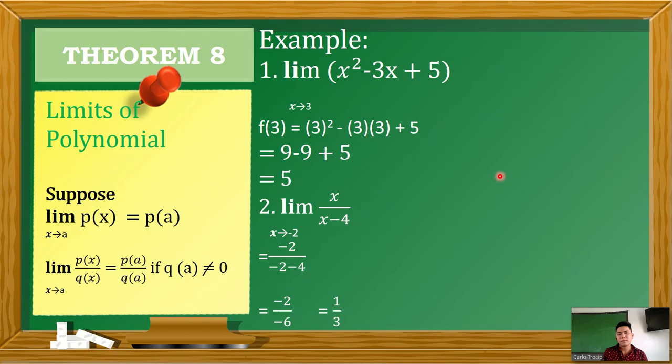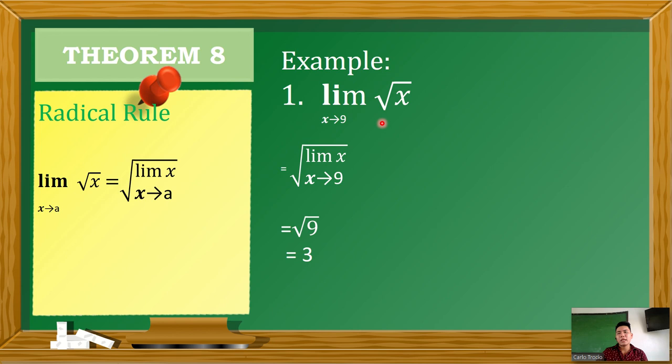Theorem 8 is the radical rule. Just as we did with exponents, we enclose the entire expression with the radical sign. For example, the limit of the square root of x as x approaches 9: enclose everything under the radical, solve inside — limit of x as x approaches 9 is 9 by Theorem 2 — then take the square root of 9, which is 3.